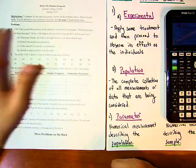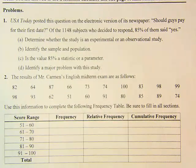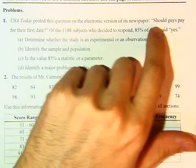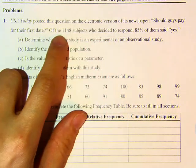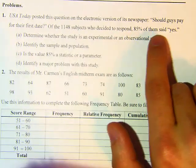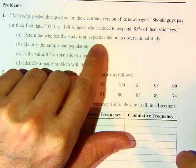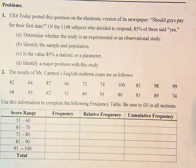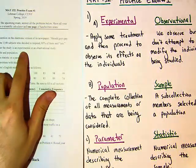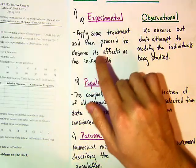For Problem Number One, let's read it together. USA Today posted this question on the electronic version of its newspaper: 'Should guys pay for their first date?' Of the 1,148 subjects who decided to respond, 85% of them said yes. The first question asks us to determine whether the study is an experimental or an observational study. Before we answer, let's quickly look at what each type is.